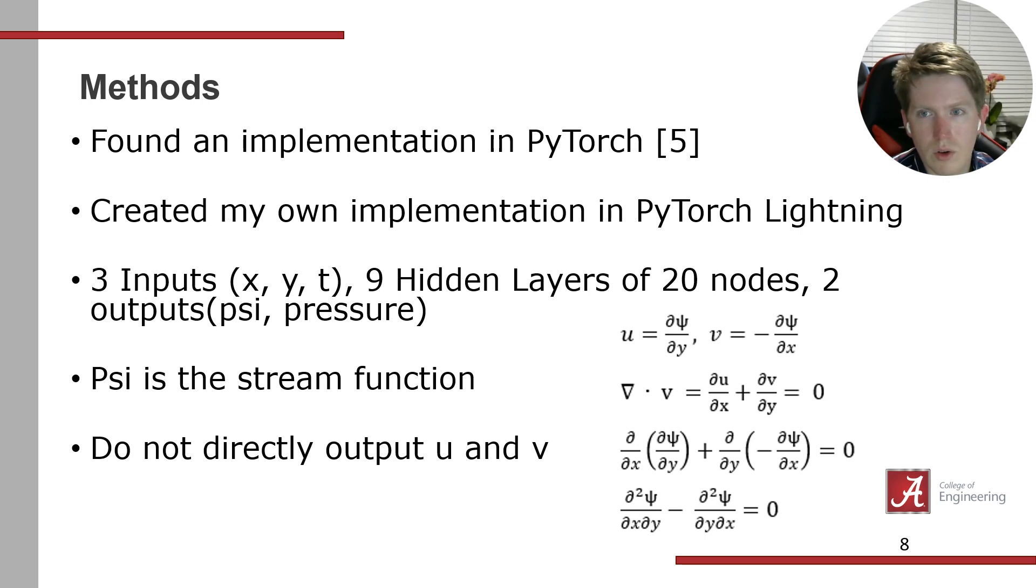Now I'll go over the methods for implementing the PINN I created. First, I found someone's implementation in PyTorch and used that as inspiration to create my own in PyTorch Lightning using their initial architecture as a starting point. The architecture had three inputs—X, Y, and T—nine hidden layers with 20 nodes each, and two outputs: psi and pressure. Psi is the stream function.